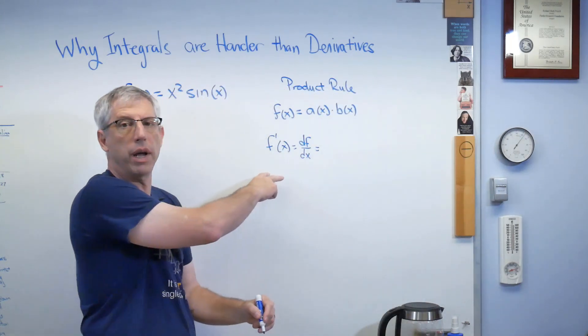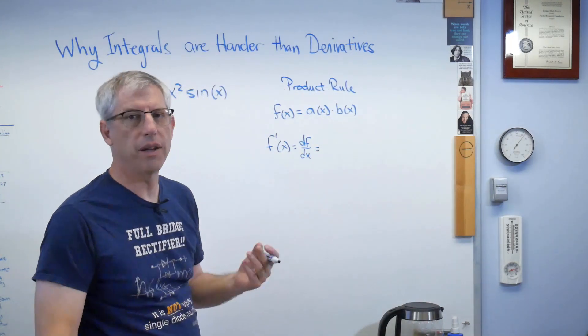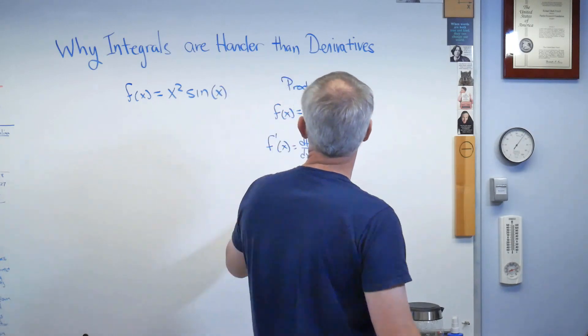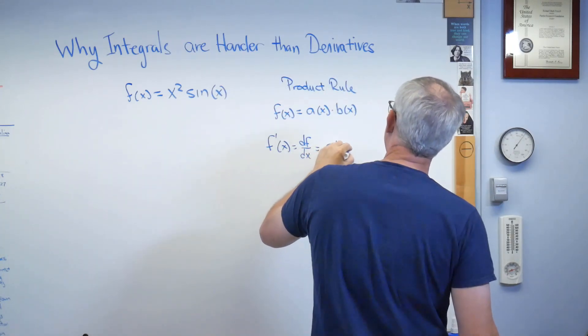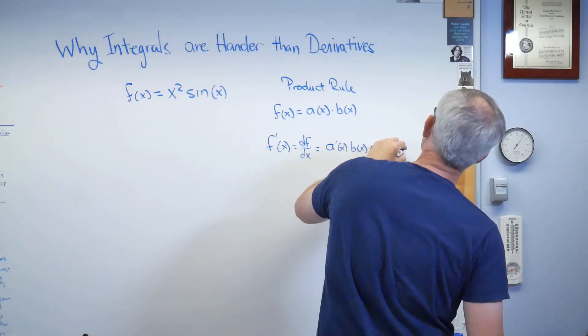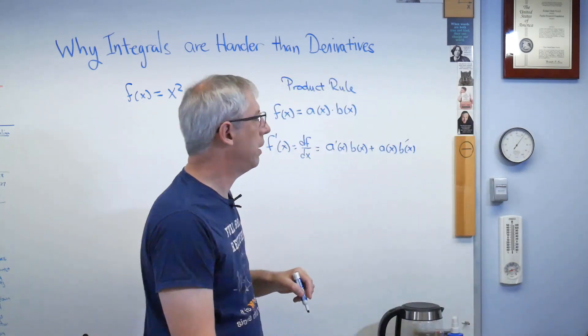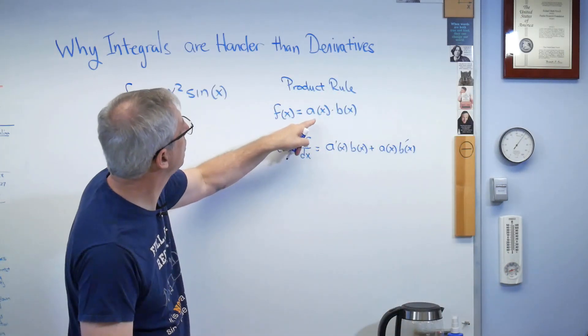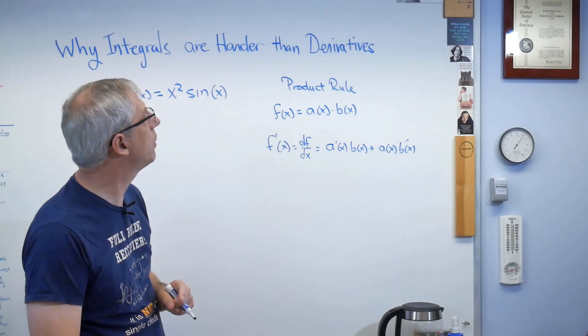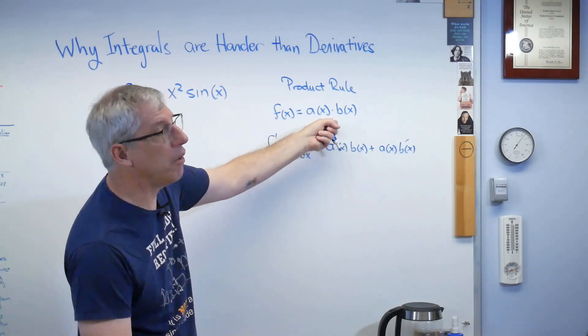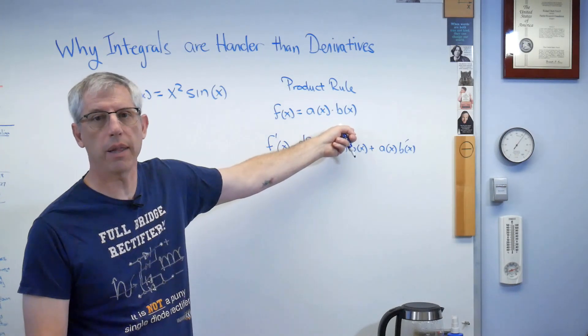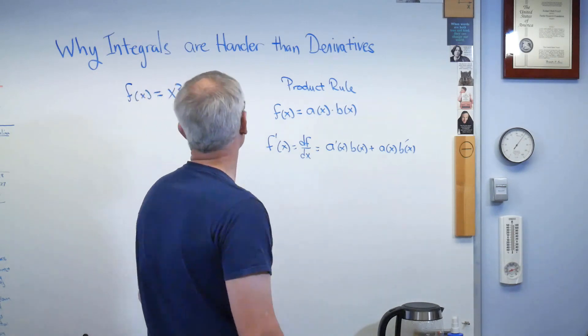Now remember there's two ways to write the derivative. They mean the same thing. They're just different people helped develop calculus, so there's a couple of different notations, but these are equivalent. That's going to be a prime of x times b of x plus a of x times b prime of x. If you want to say this out in words, it's the derivative of the first times the second plus the derivative of the second times the first. That's what this is. And that's the product rule. And this is true for all functions of this form. This is a general rule.